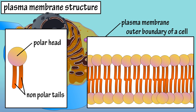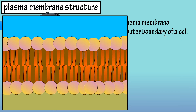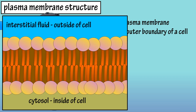The membrane is formed as the heads face out and the tails face in, forming a bilayer that acts like a fence, as you can see here. The inner part of the cell, called the cytosol, is here and the outside of the cell is here.